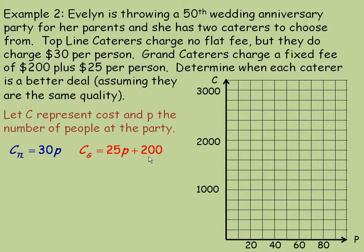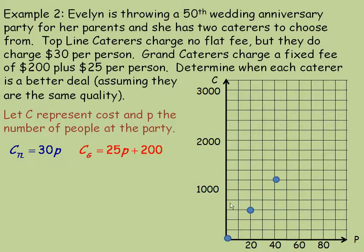For the Top Line Caterer, if P equals 0, then 30 times 0 is 0, so this line starts at the origin. For 20 people, 20 times 30 is 600. Notice the scale here is 200, 400, 600, 800, 1000. For 40 people, 30 times 40 is 1200, so at 40 people the Top Line charge is $1200. At 100 people, 30 times 100 is 3000, so the line ends at 3000.